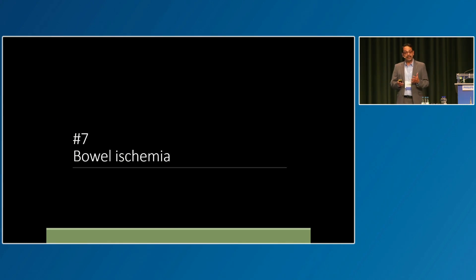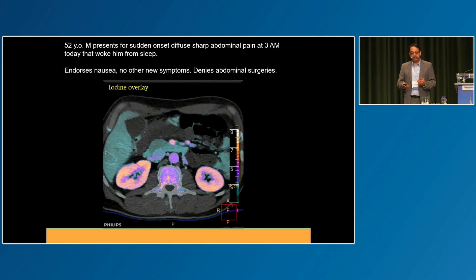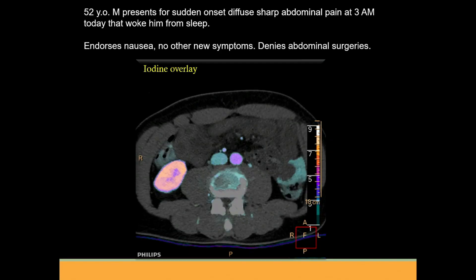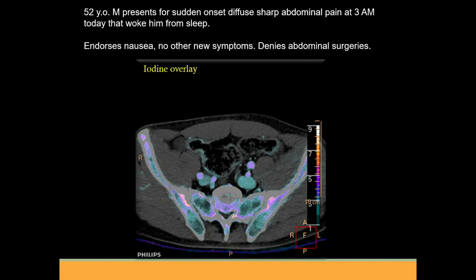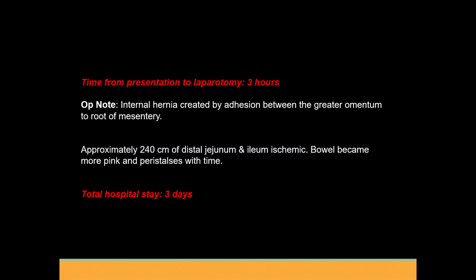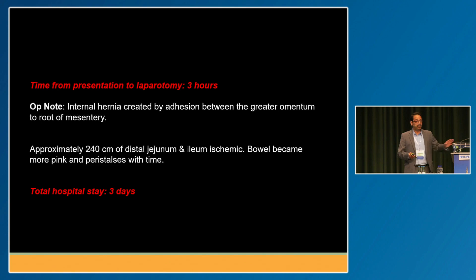Timely diagnosis of bowel ischemia is absolutely critical on CT because the clinical diagnosis is very difficult. This person presents with abdominal pain for a few hours, and right away you can see most of this bowel is ischemic — this is a closed-loop obstruction. This patient did really well. They went to the OR and were discharged in three days, because we were able to give a speedy and accurate diagnosis. If you're not able to diagnose this in a timely fashion, this can go in a whole different pathway.